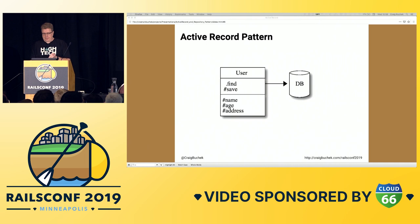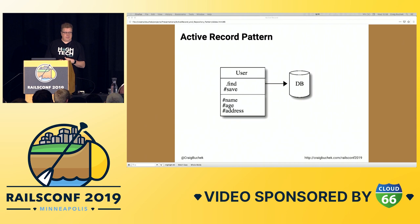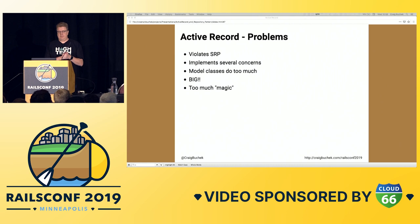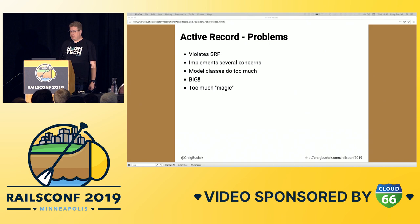Here's a UML class diagram of the Active Record pattern. Note that there are two different kinds of things going on: Find and Save deal with persistent storage, above the line. Below that line, we have name, age, and address that deal with domain logic. The biggest problem I have with Active Record is that it encourages bad engineering habits, mostly because it violates the Single Responsibility Principle — it commingles persistence and domain logic.